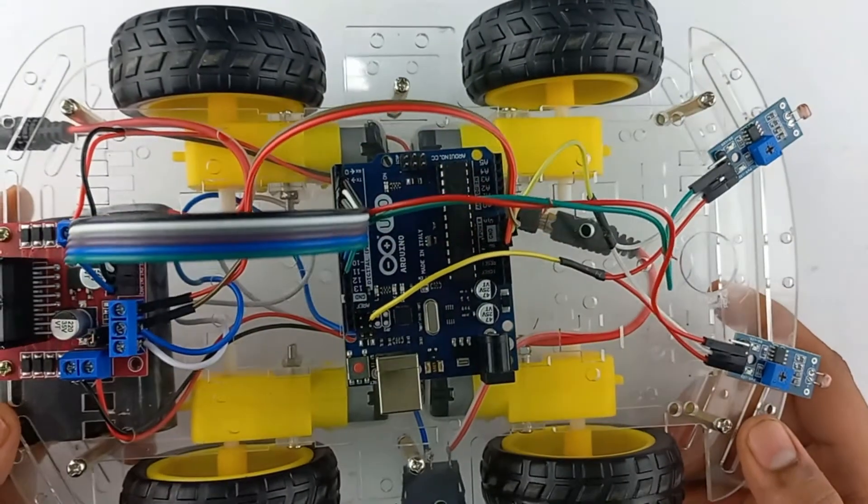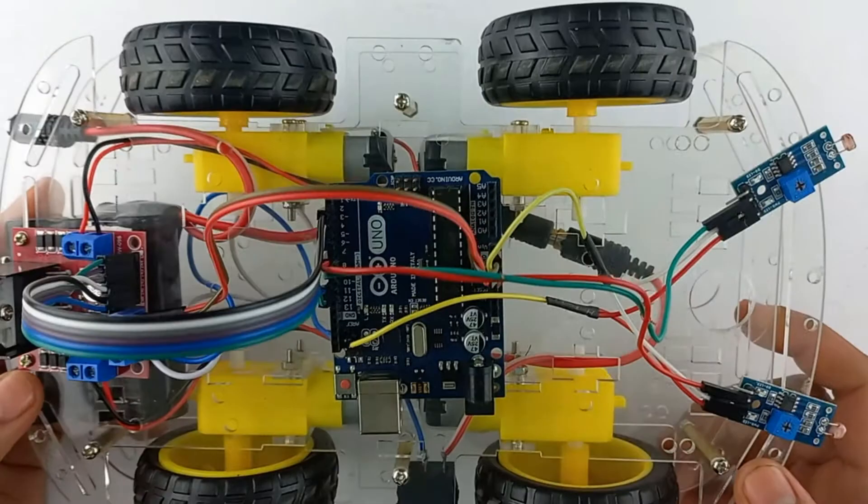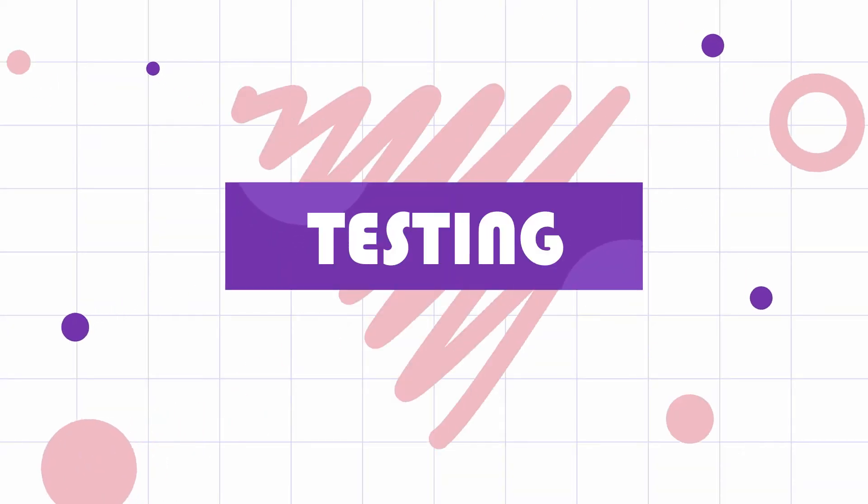So we are done with the connection part as per the circuit diagram. Now let's test the light-chasing robocar.